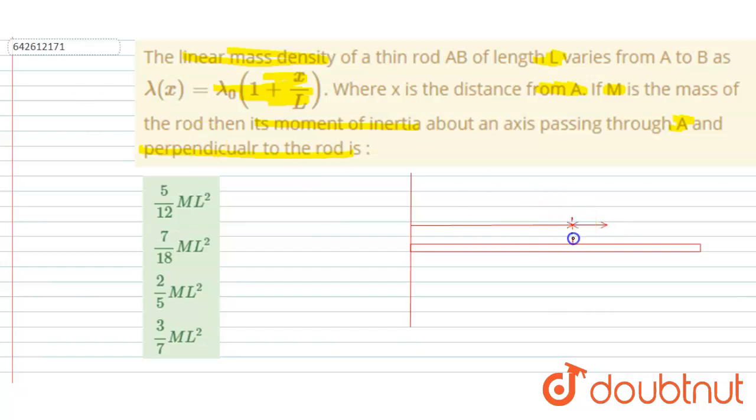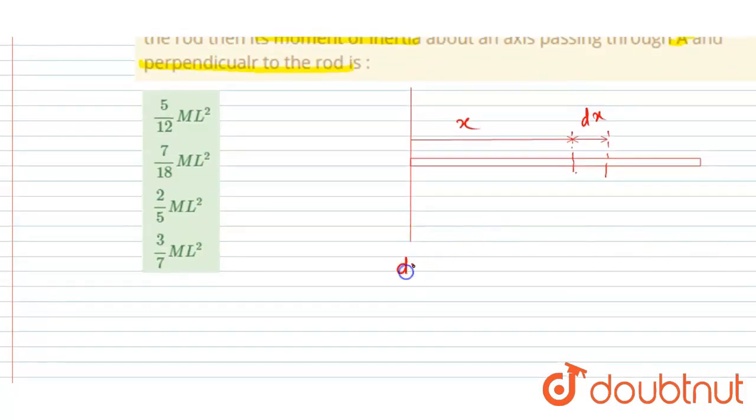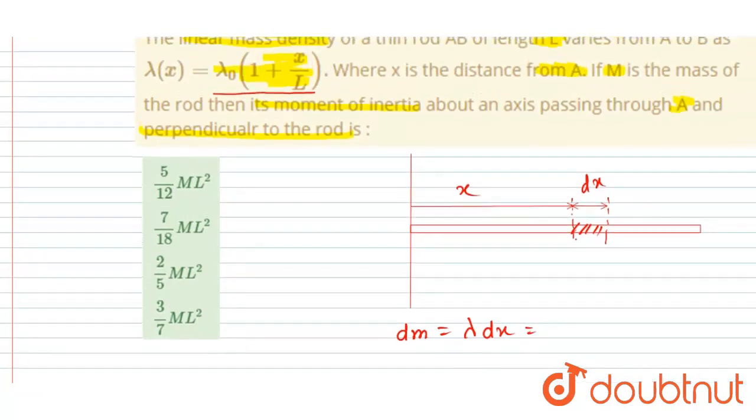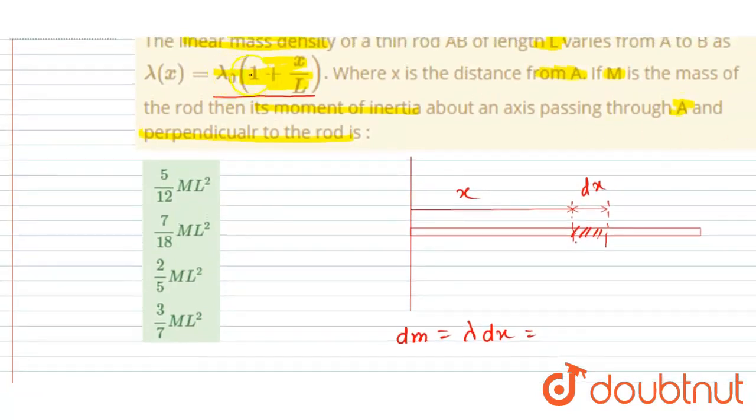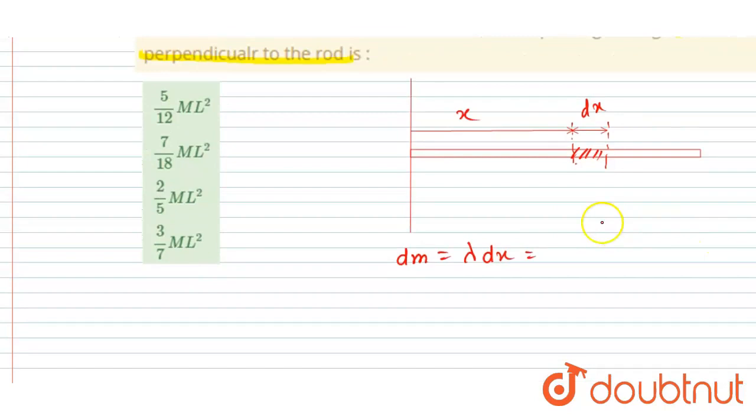So if you see here, this is the DX at a distance of X. This DX element has linear mass density. You can calculate the mass of this DX by multiplying mass per unit length into length. Length is DX. So lambda is varying with X as lambda naught times 1 plus X by L.